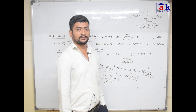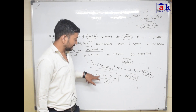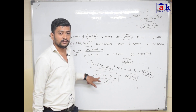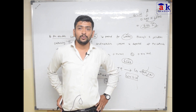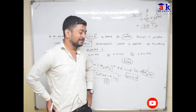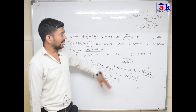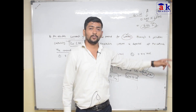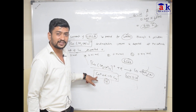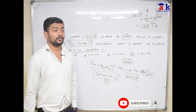तो charge है 0.02 Faraday। इस equation से यह बात निकलती है कि अगर 1 mole Cu⁺ है तो 1 Faraday charge चाहिए, या 1 Faraday charge के लिए 1 mole Cu⁺ consume होगा। हमारे पास charge 0.02 Faraday है, तो 0.02 mole Cu⁺ consume होगा — मतलब 0.02 mole copper deposit होगा।